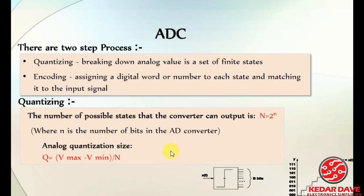The number of possible states that the converter can output is N = 2^n, where n is the number of bits in the analog-to-digital converter. For the quantization process the formula is: (Vmax - Vmin) / N, where N = 2^n and n is the number of bits.